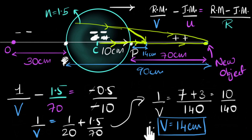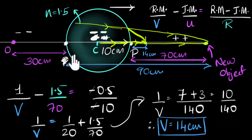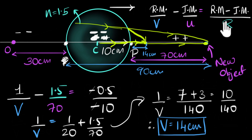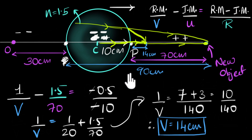This is the general way to solve any problem where multiple refractions take place: take the image of the first surface as the object for the next surface and apply the curved surface refraction formula again. If there were another surface, you would just repeat the same process.